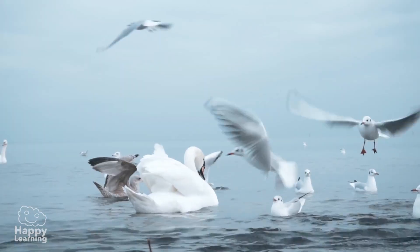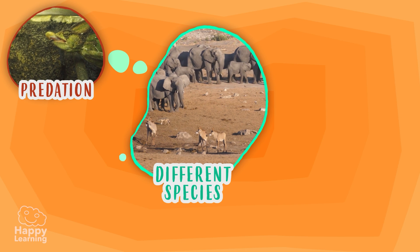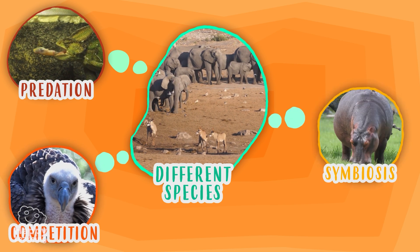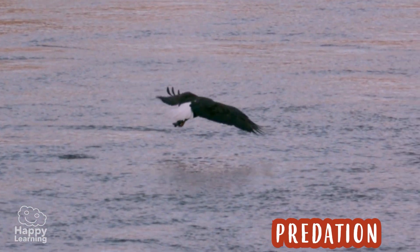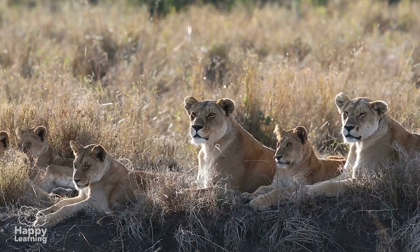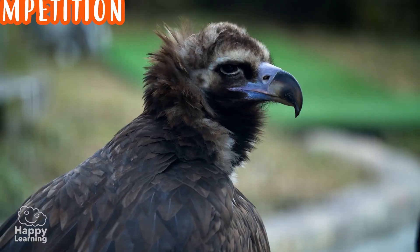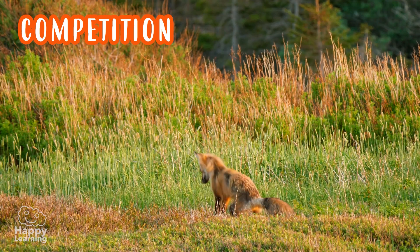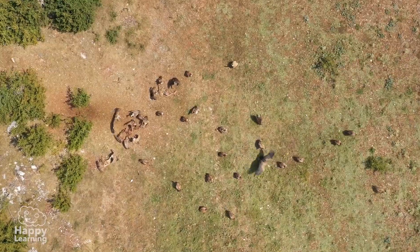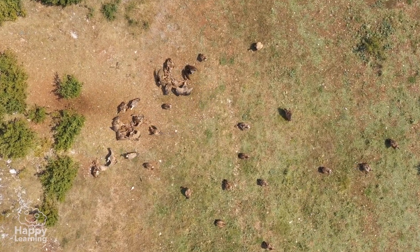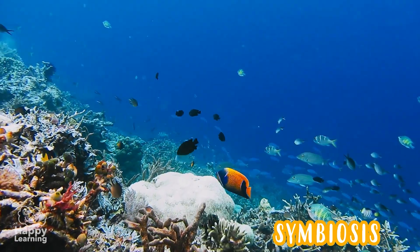Individuals of different species also relate to each other. There are three different ways: predation, competition, and symbiosis. Predation is when one living thing hunts another living thing to eat it, like these lions hunting these wildebeests. Competition exists when two different species compete with each other to get something, just like these vultures and this hyena fighting over the carcasses of other animals they find.